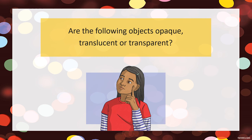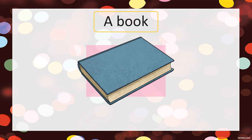Let's see some other examples. A book — is a book opaque, translucent, or transparent? A book is an opaque object. It does not allow any light to pass through, so it will produce a very dark and clear shadow. Cahaya tak boleh tembus, jadi akan menghasilkan bayang-bayang yang jelas.